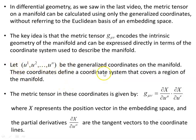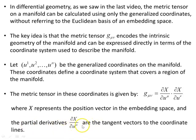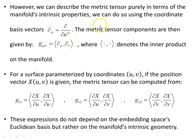We let u¹, u², …, uⁿ be the generalized coordinates on the manifold in n dimensions. These coordinates define a coordinate system that covers the region of the manifold, and the metric tensor in these coordinates is given by g_μν. Here capital X represents a position vector in the embedding space — often Euclidean but not necessarily — and the partial derivatives ∂X/∂u^μ are the tangent vectors to the coordinate lines.